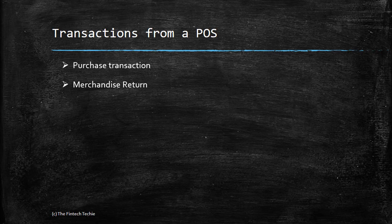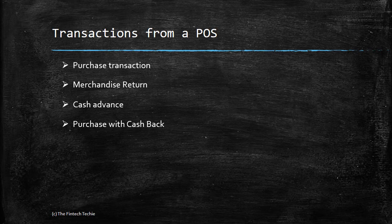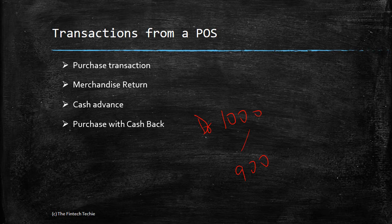Typical transactions supported from a POS include: Purchase, which everyone is familiar with; Mercantile Return, which is a refund when you return something you bought; Cash Advance, available in some countries where you can get cash from a merchant like an ATM; and Purchase with Cashback, where part of the amount purchases goods and the remainder is given to you as cash — for example, 1000 debited, 900 for goods, 100 as cash.